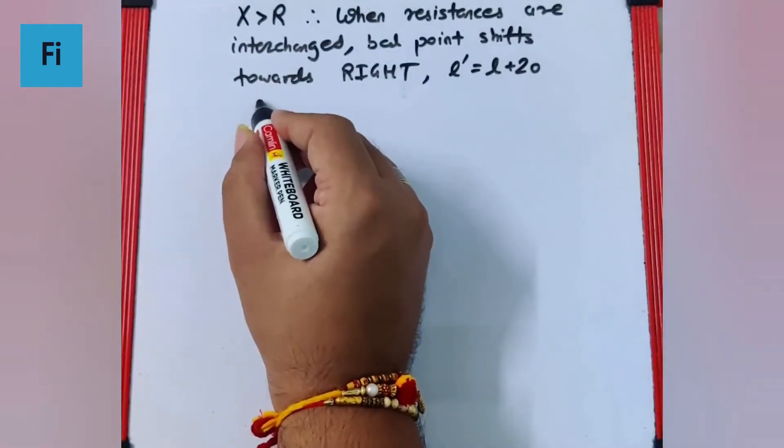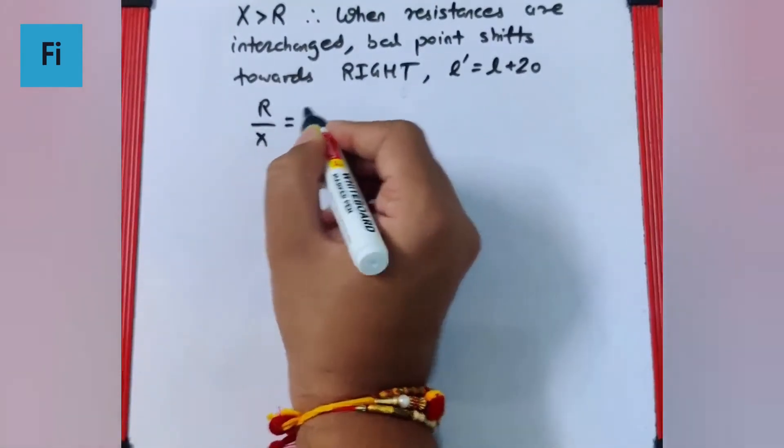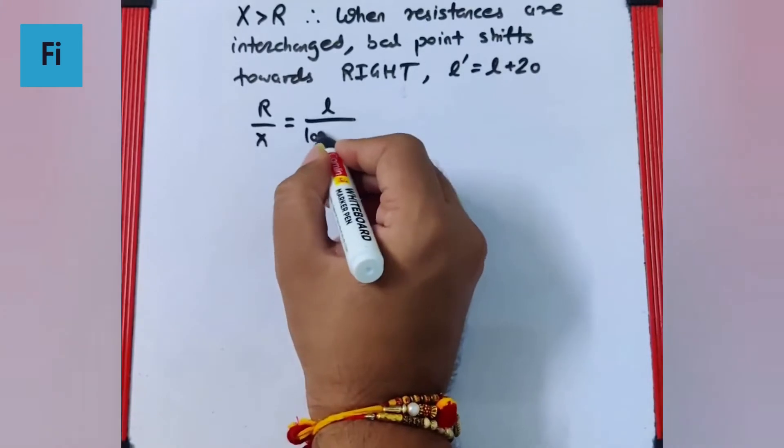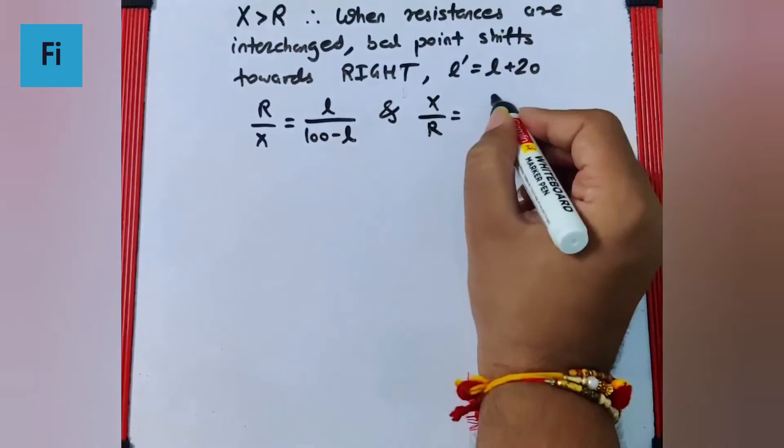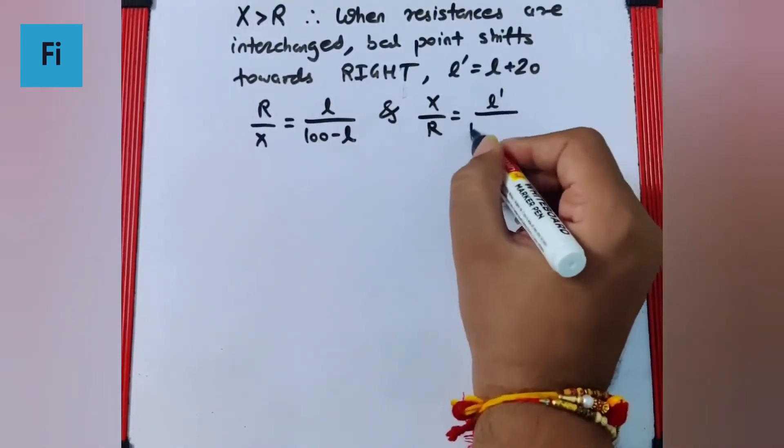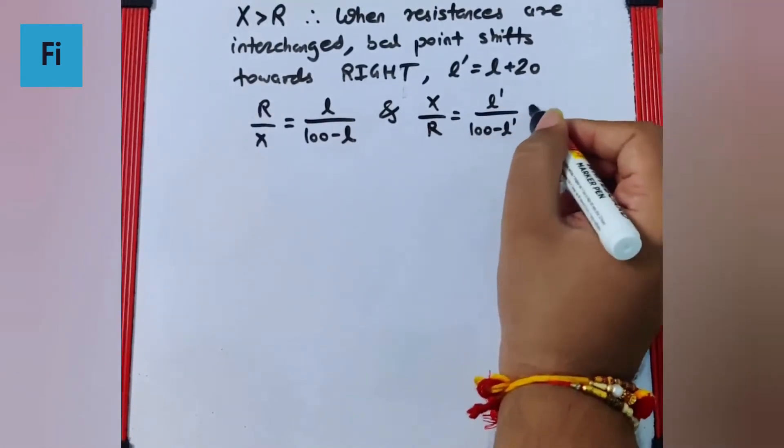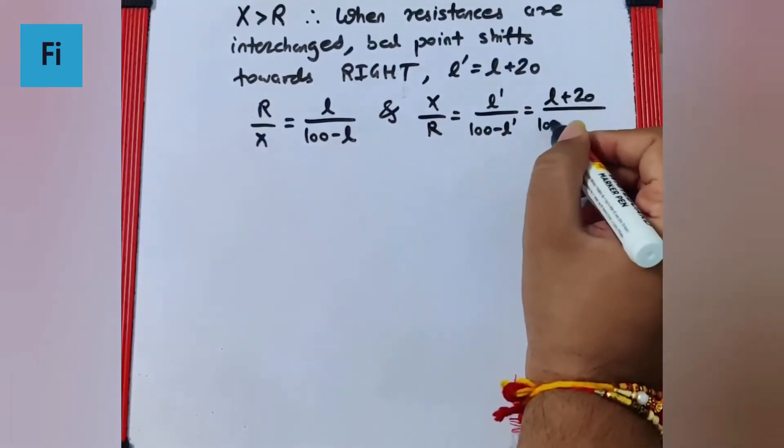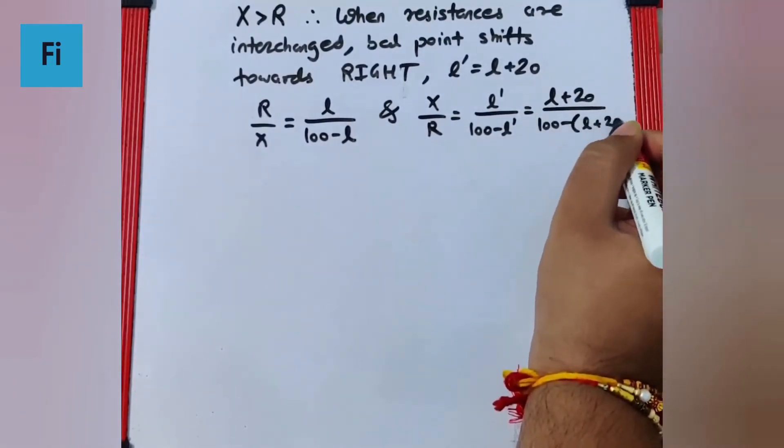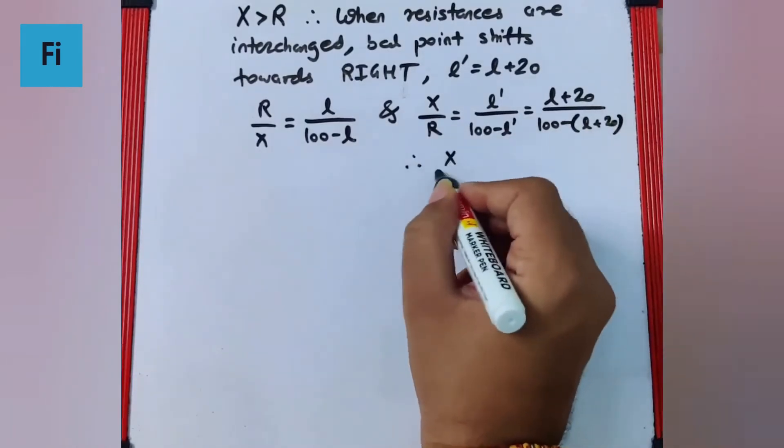I can say R by X was L upon 100 minus L, and X by R is L dash upon 100 minus L dash, which is L plus 20 upon 100 minus L plus 20. That means X by R is equal to L plus 20 upon 80 minus L.